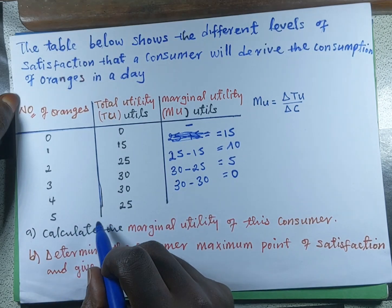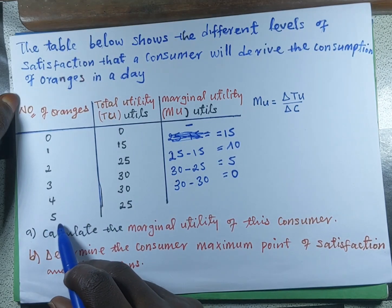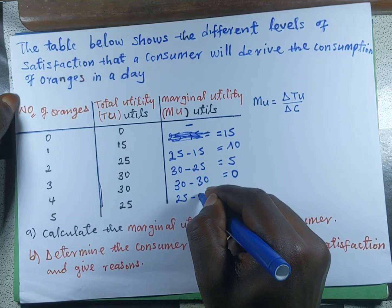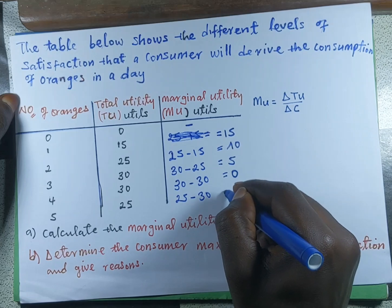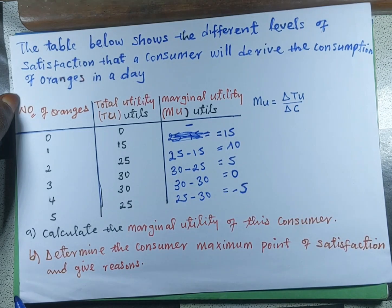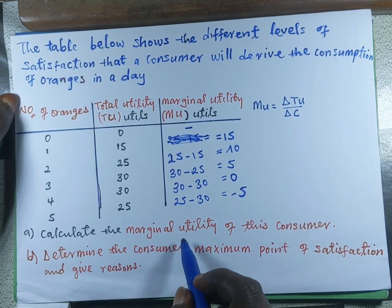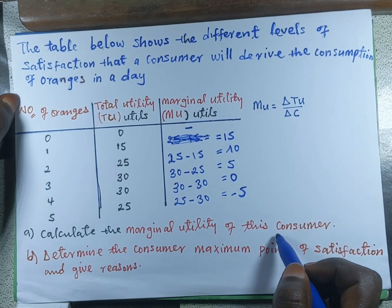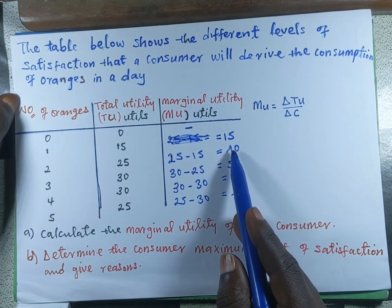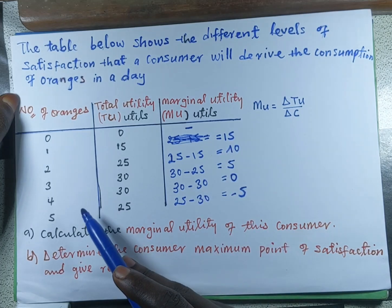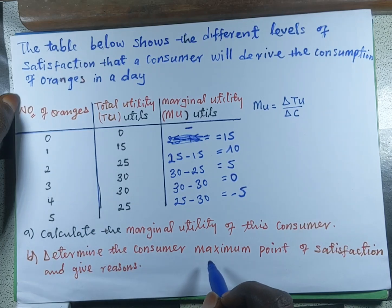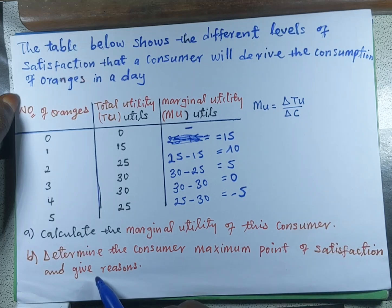For the last orange, that is the fifth orange, after consuming it we are going to have 25 minus 30, which gives us minus 5. So these are the different marginal utilities we have calculated for the different oranges consumed. The last question asks us to determine the consumer's maximum point of satisfaction and reasons.